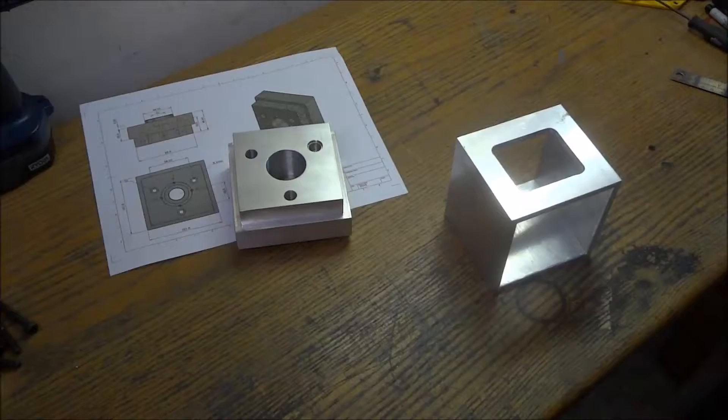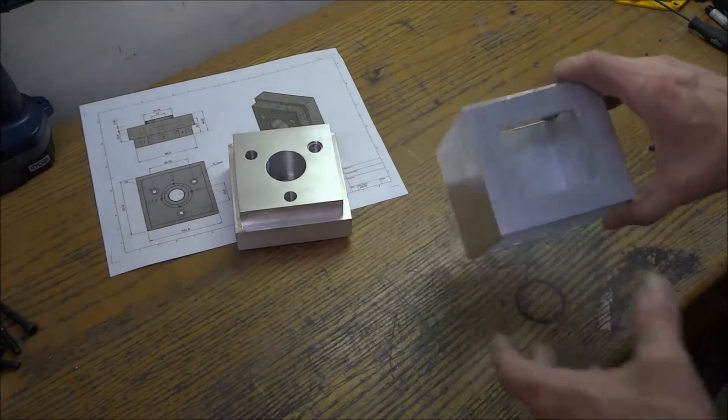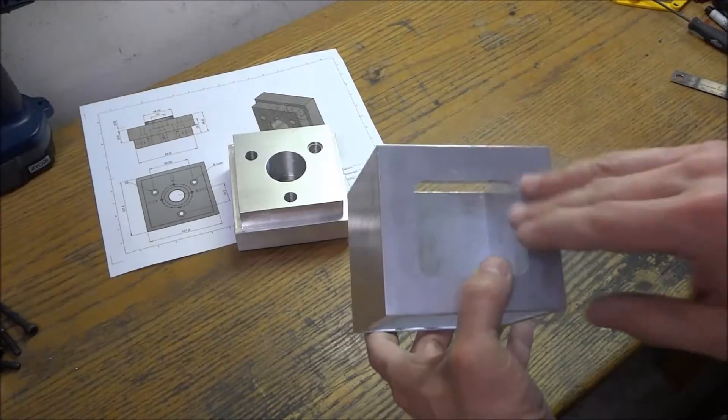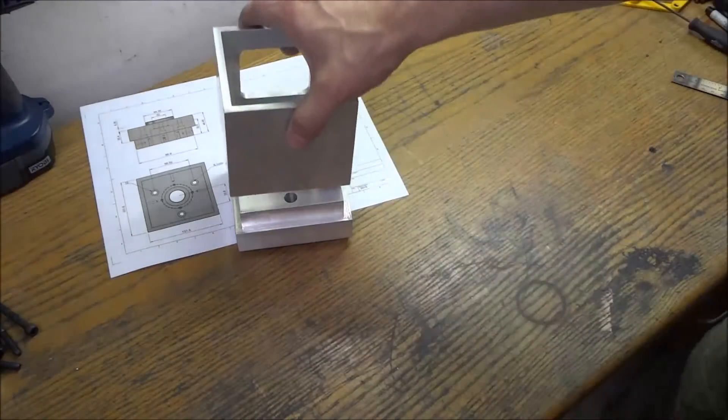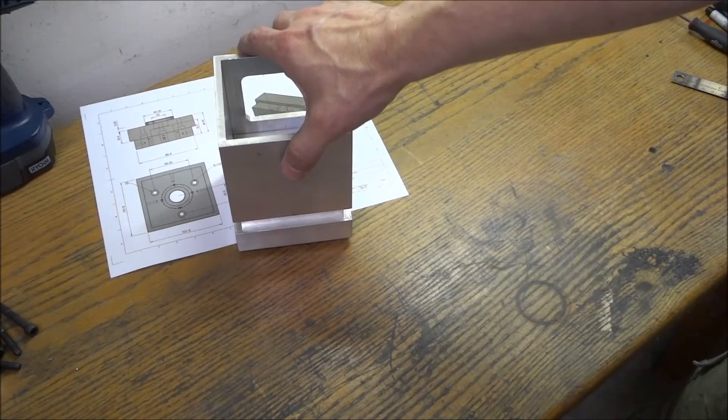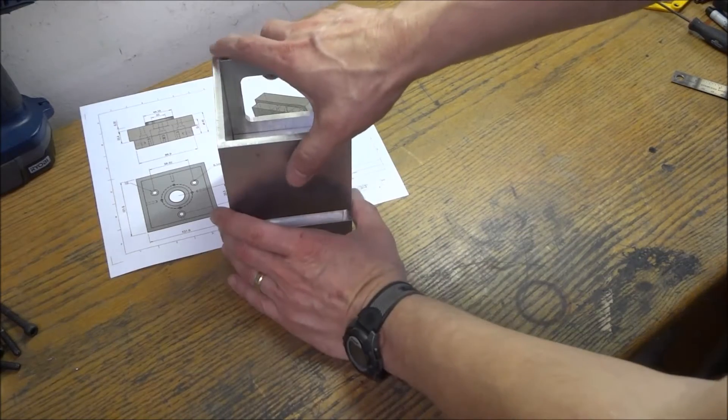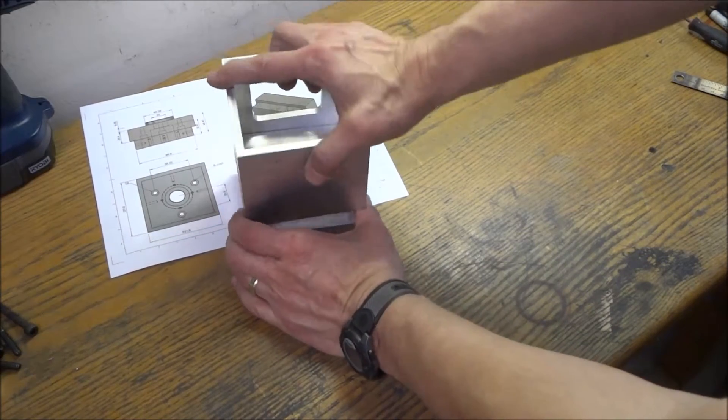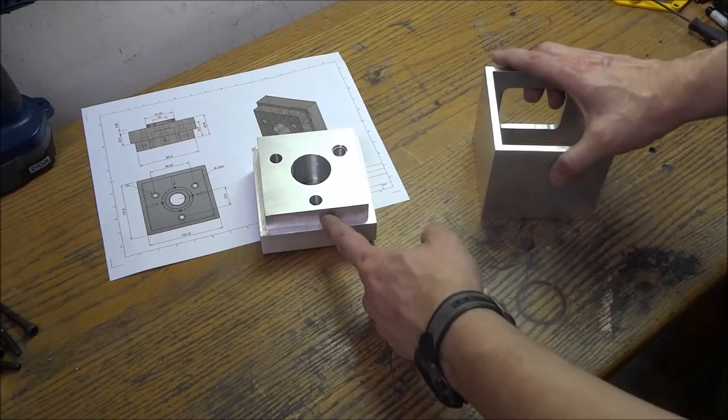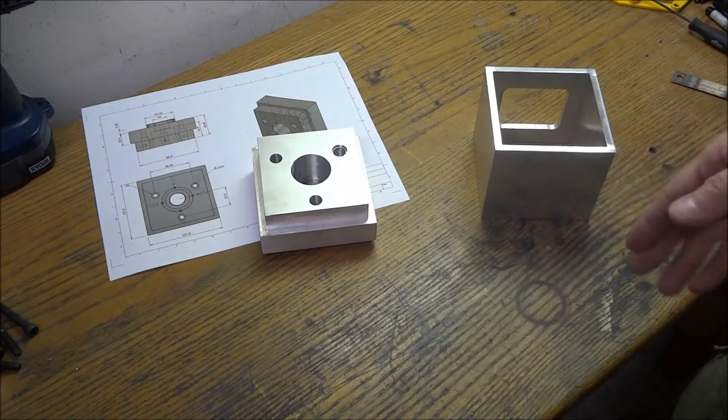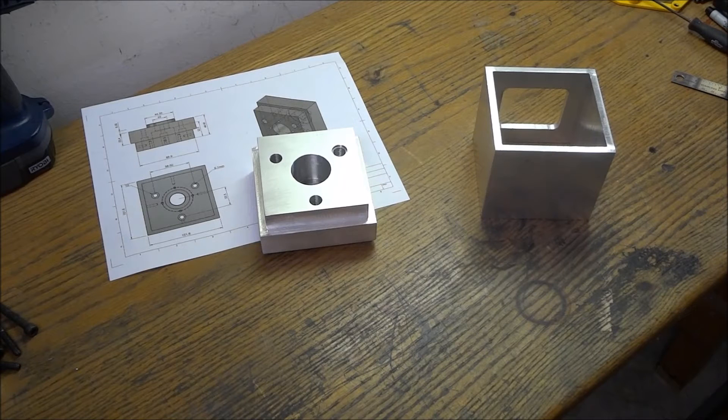Alright, we've got our stepper mount spacer machined. What we're going to do is I'm going to turn this opening to the back like so, and what we're going to do now is we're going to mark our holes for our screws. Again we're just going to use countersink screws.